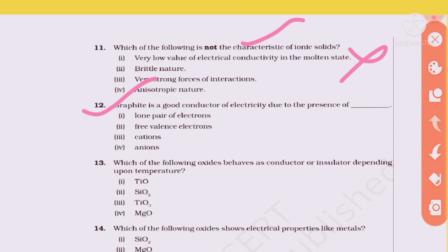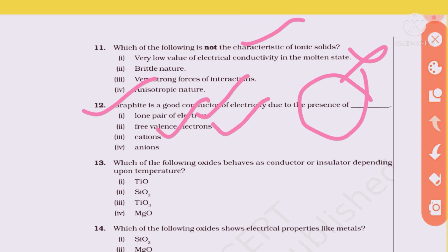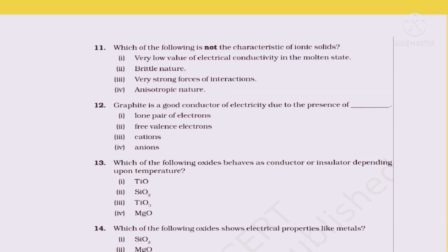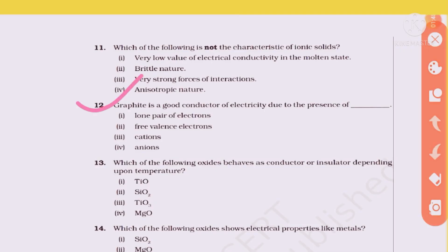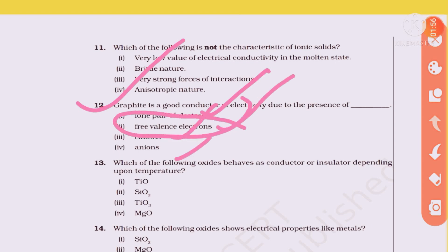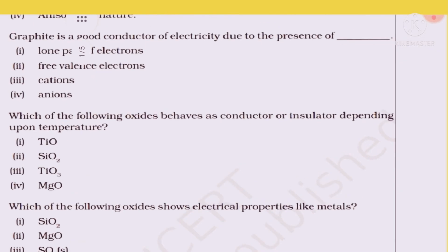Question 12: Graphite is a good conductor of electricity. Why? Because it has free valence electrons — lone pair of free valence electrons. This is a simple but very important question. The right answer is option 2: free valence electrons.